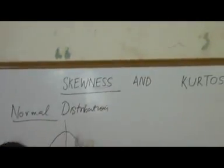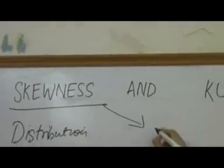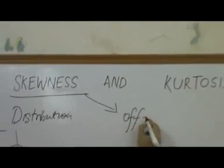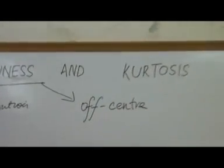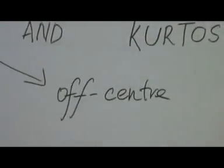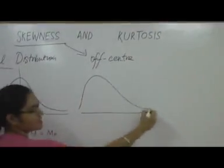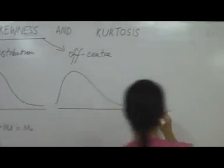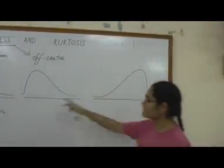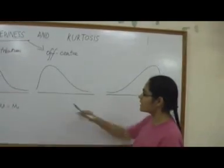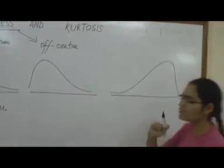Now, what is skewness? Well, in one word, skewness refers to the fact that a distribution is off centre. So let's say I have a distribution which looks somewhat like this, or a distribution which looks somewhat like that. You see, in both these distributions, there is a hump and there is a tail.